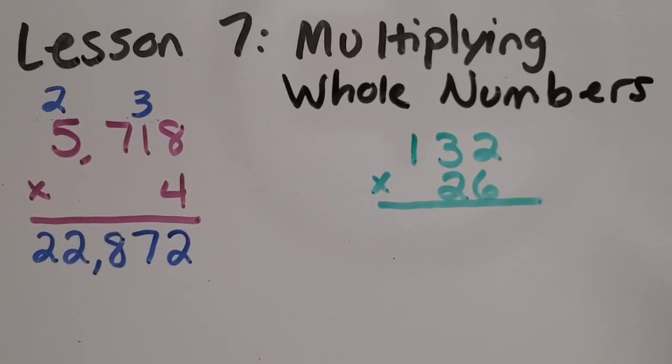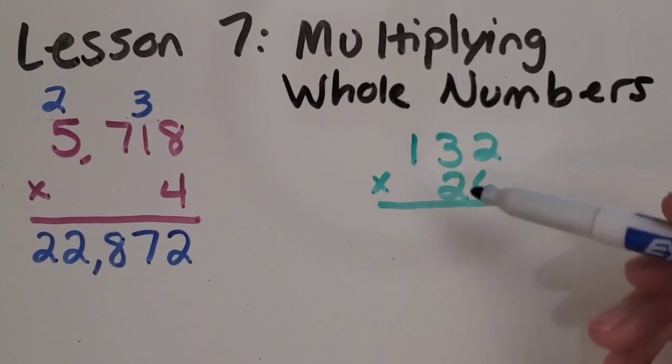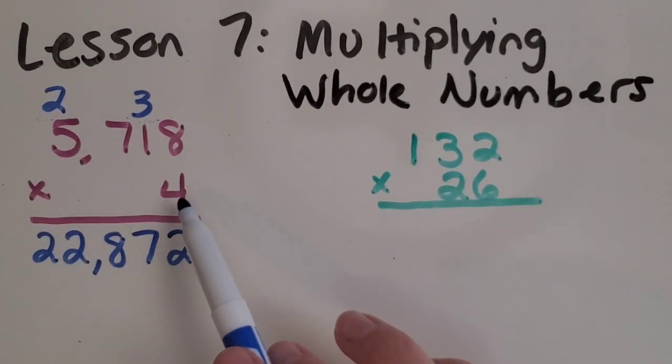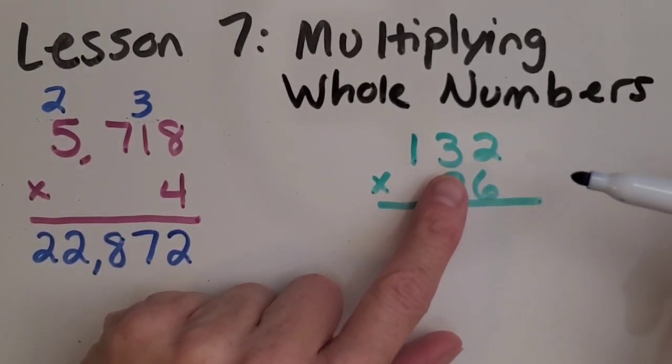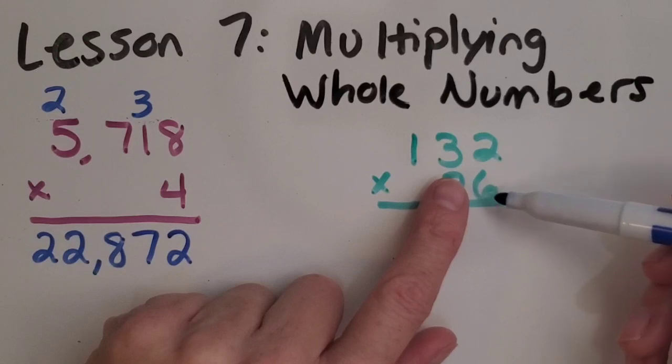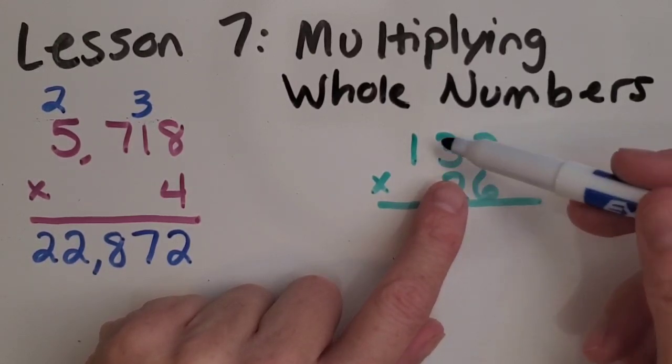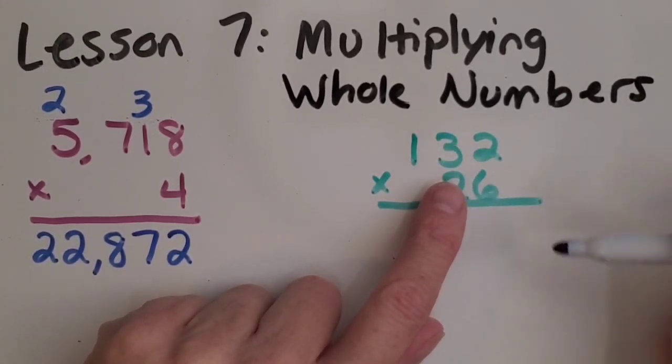And now I'd like to move over to my three digit times a two digit number. We're going to do a lot of the same steps, same process, and I'll guide you through what to do with the other digit. So let's start with the ones place. We want to multiply everything times six, just like we did over here times the four. And sometimes I like to cover up my tens place so that I don't accidentally multiply by that first. I want to make sure I just focus on the six.